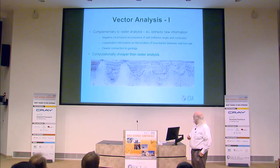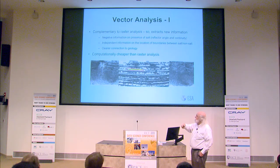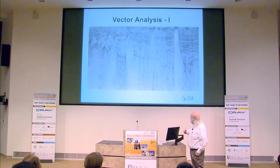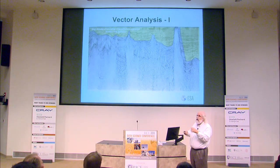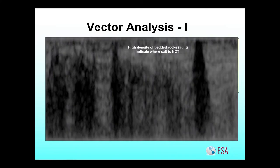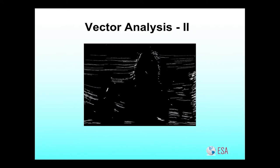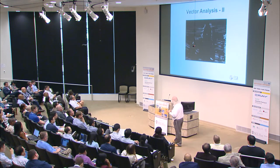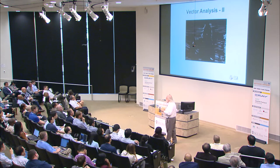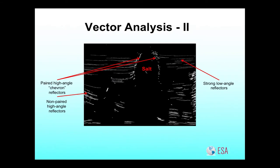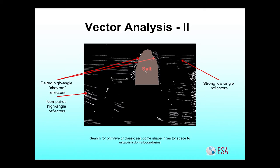We'll also do vector analysis. We'll simply try to turn these reflectors into lines. That allows us to take densities of where we have bedded rocks versus non-bedded rocks, because bedded rocks are negative information on the presence of salt — we need negative information as well as positive. The higher density of bedded rocks is shown in lighter colors, with salt in darker. We also look for patterns in the vectors themselves, because those relate to geologically understandable features like the sides of domes and low-angle beds. High-angle vectors on the sides of the salt show you where the salt is, and we exploit that information to add to the raster data.